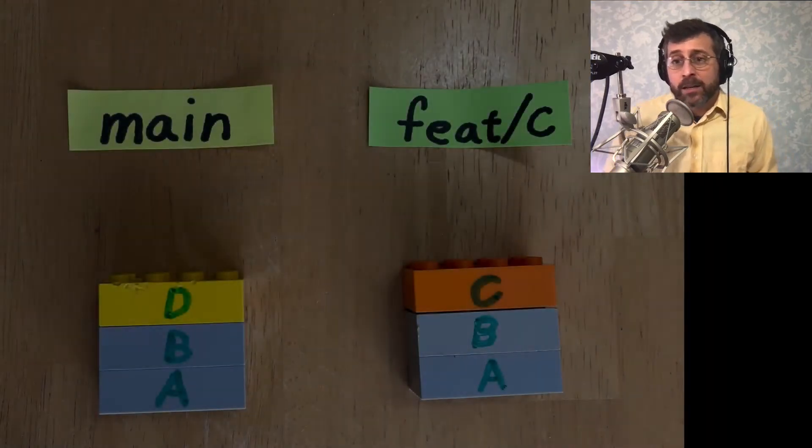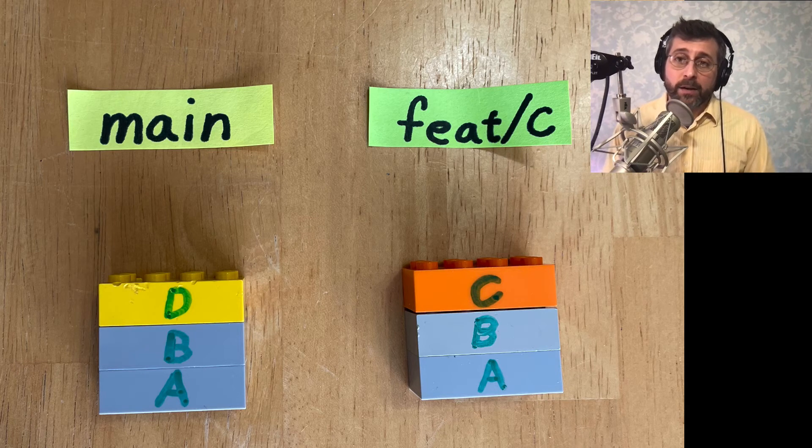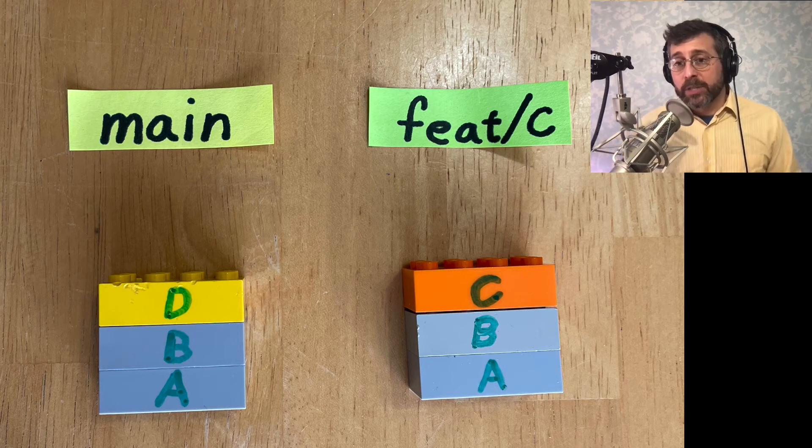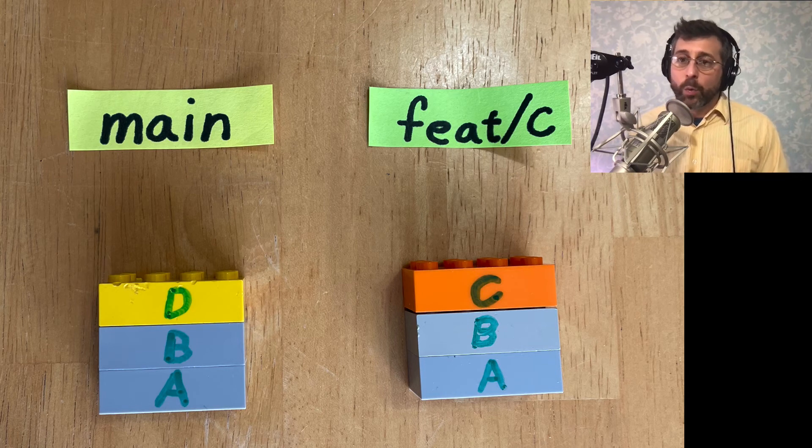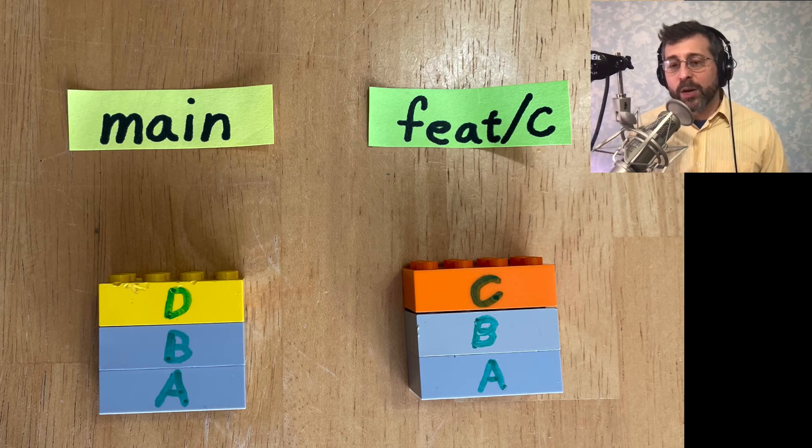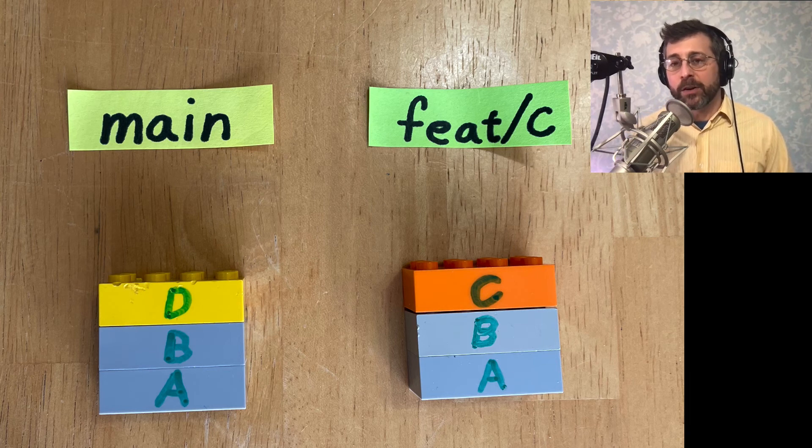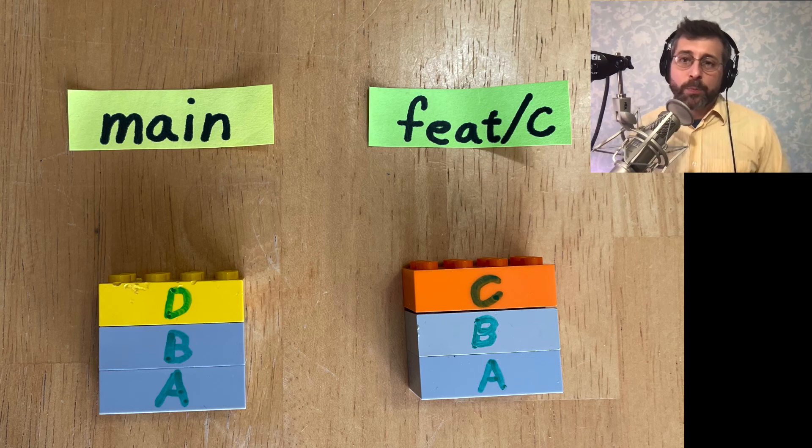Now we cannot do a fast forward merge if it doesn't fit within there. And so what happens sometimes is maybe while we're working on our feature branch, we're working on feature C, we're going through and doing that. But in the meantime, somebody else has completed feature D and merged it in. And that's when we end up with a situation like this. You can see that on our branches, main has this commit D that does not appear in our feature branch. And at this point, we say our branches have diverged and we need to decide how we're going to fix that.